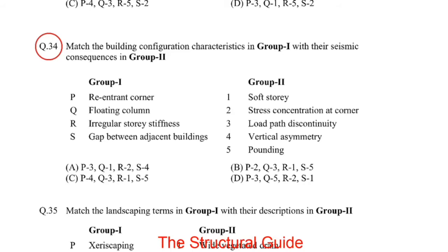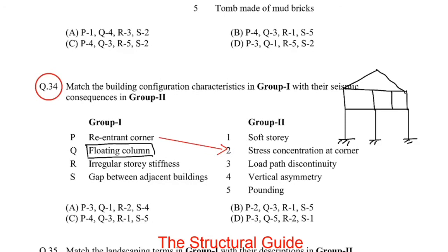The next question from the structural subject — question 34 — matches configurations in Group 1 with their seismic consequences in Group 2. For P, re-entrant corner: the correct answer is stress concentration at the corner. For Q, floating column: a floating column is one that is not directly above another column but is supported by a beam, which causes discontinuity in the load path.